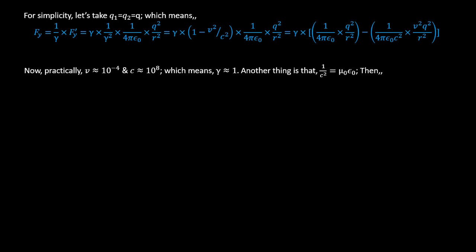Now, practically electrons move with velocity v of order 10⁻⁴ m/s, while c is of order 10⁸ m/s. So v²/c² is of order 10⁻²⁴, which means gamma is practically equal to 1. Also, 1/c² = μ₀ε₀, where μ₀ is the magnetic permeability in vacuum. Putting gamma = 1 and 1/c² = μ₀ε₀ into our expression: